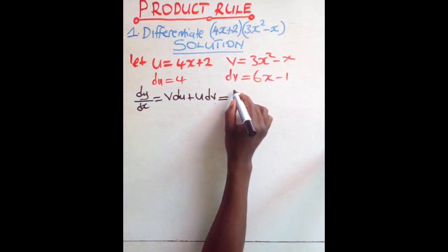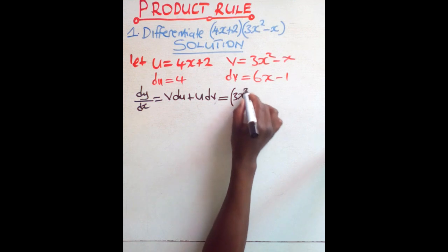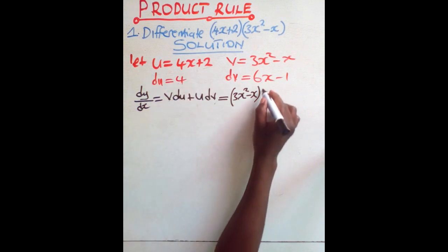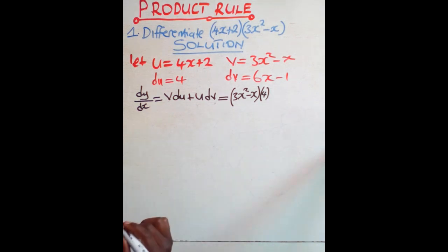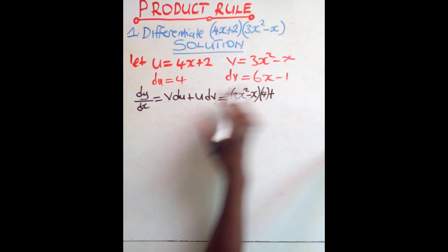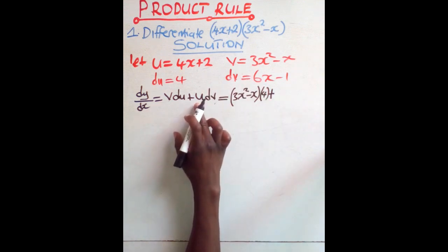So you open the brackets, you say 3x squared minus x. It's v du. Our du is that 4, so times 4. Then plus, we are adding u dv. Our u is 4x plus 2.